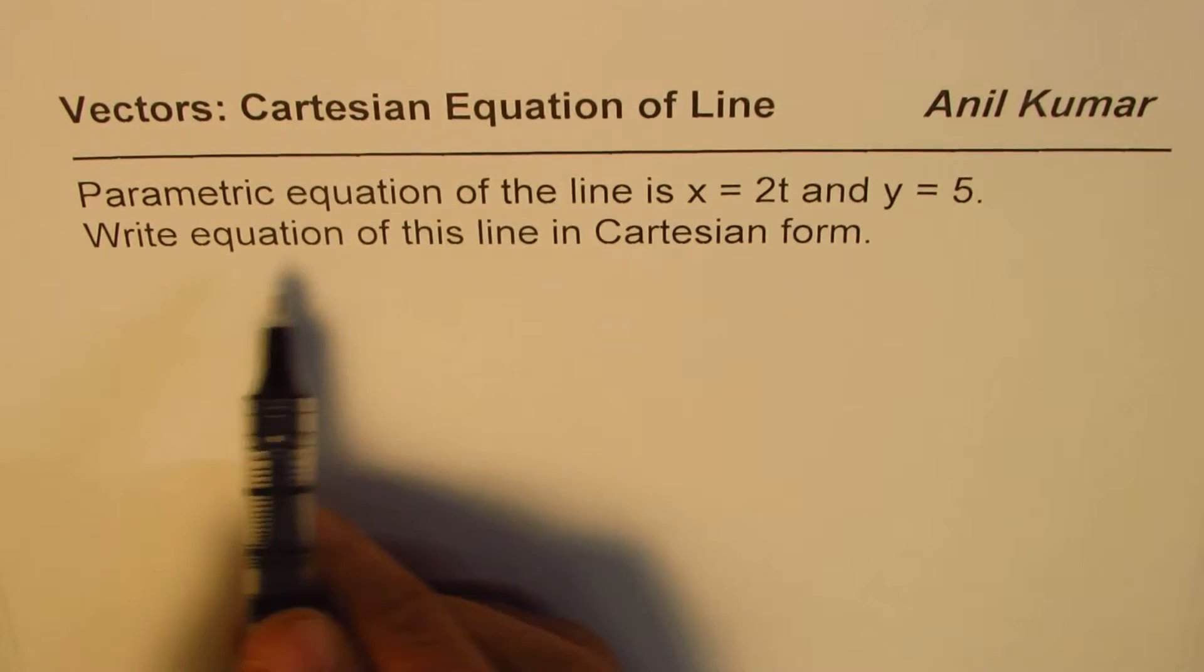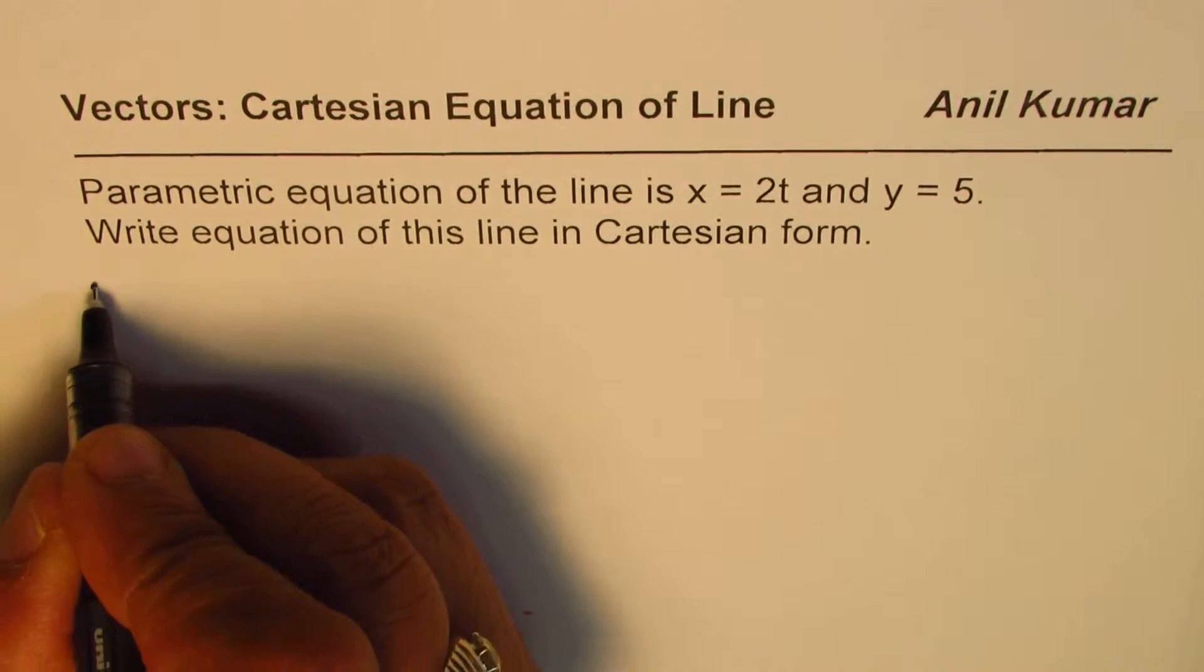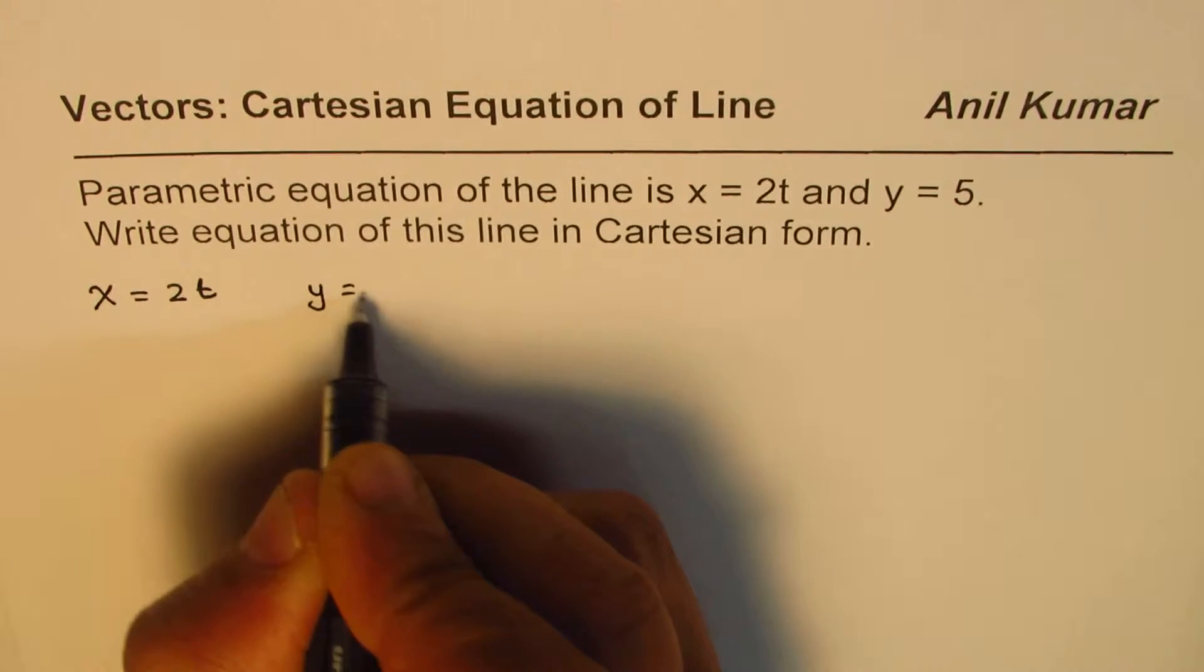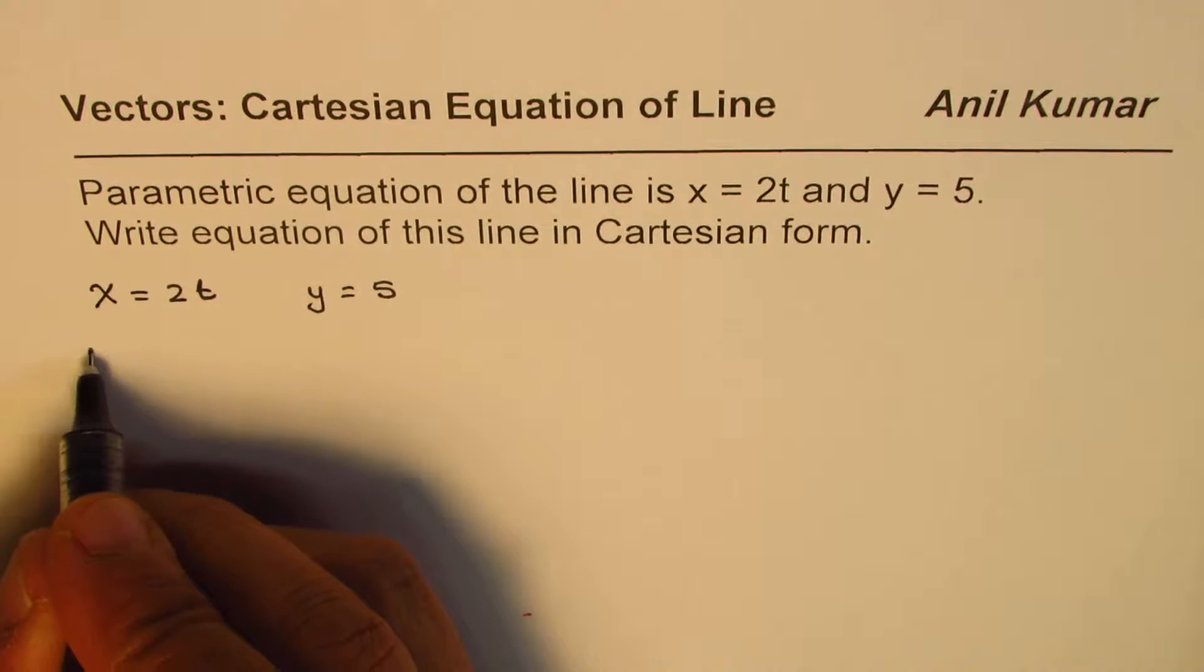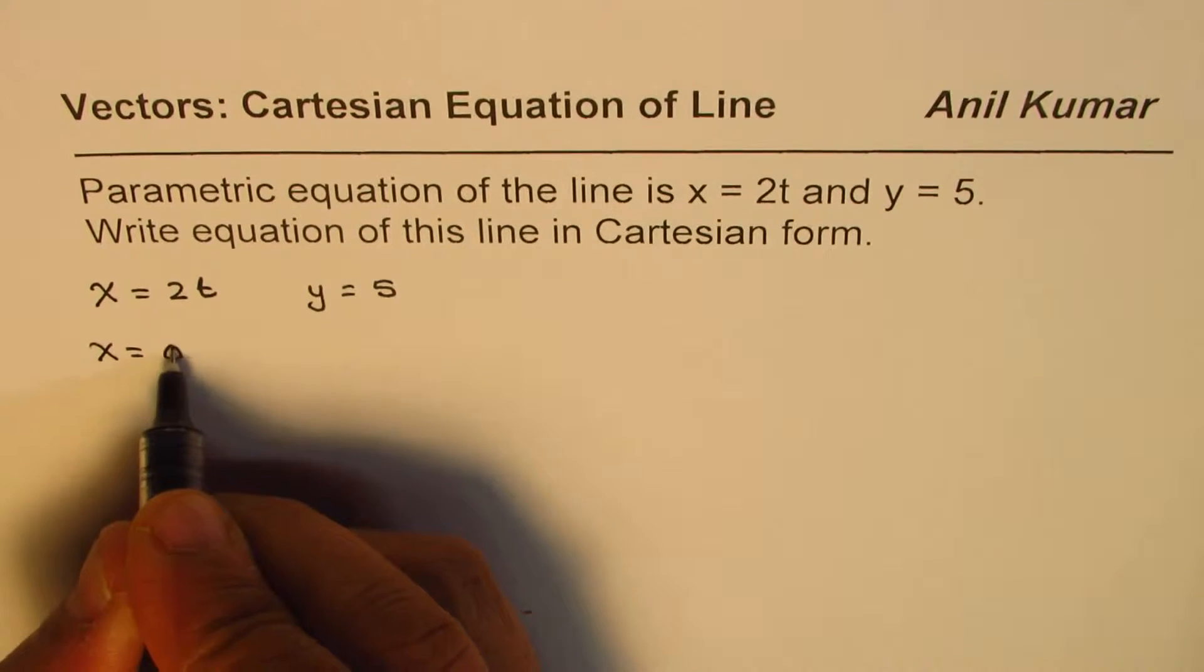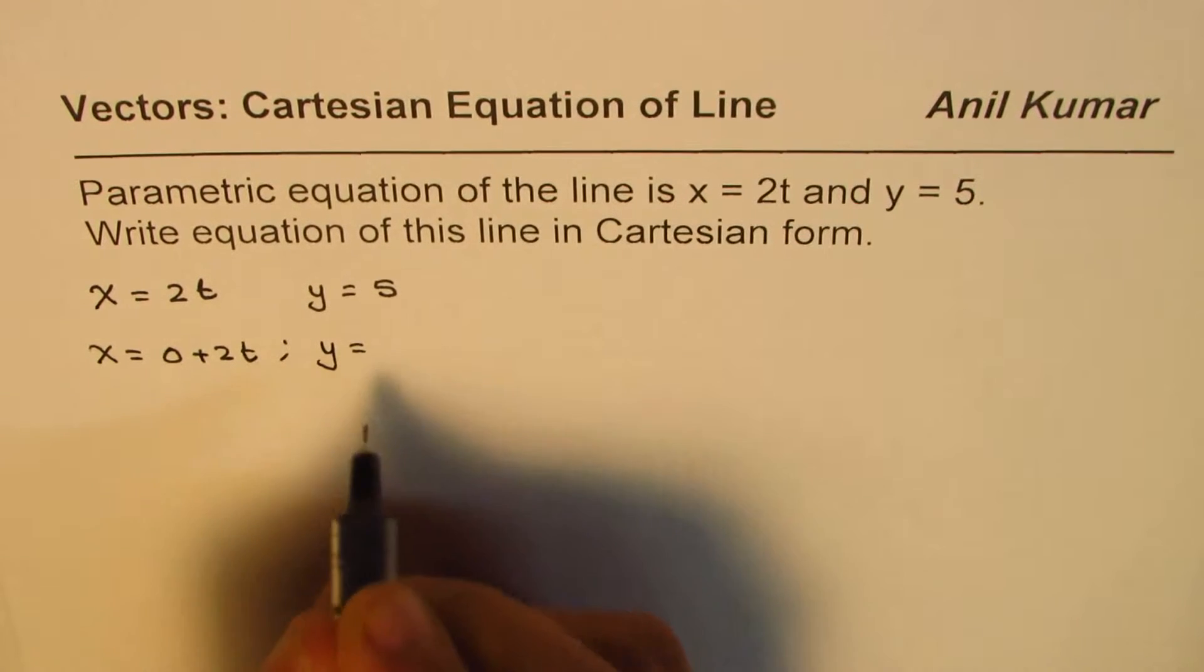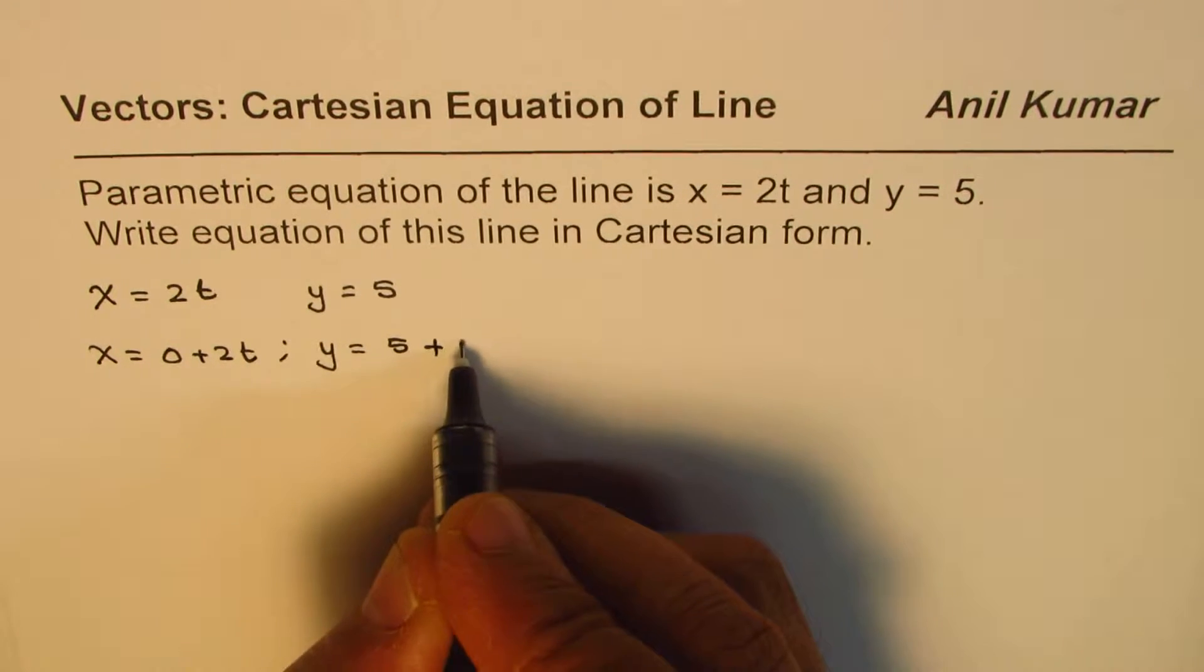So what we are given here is x equals 2t and y equals 5 that represents the line. Let me rewrite this equation. We can write this as x equals 0 plus 2t, and y equals 5 plus t times 0.